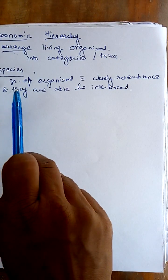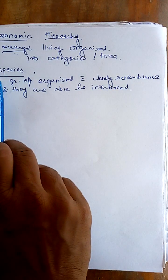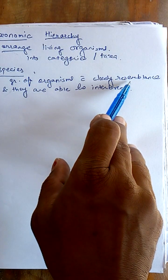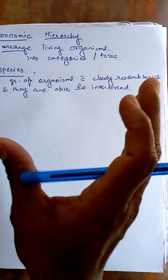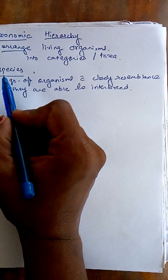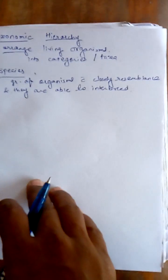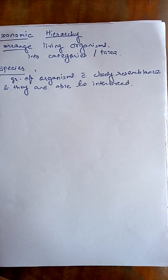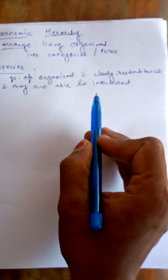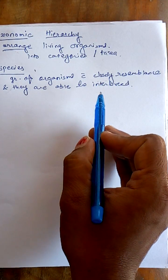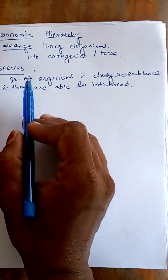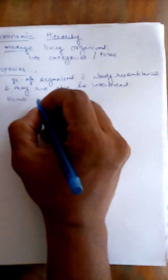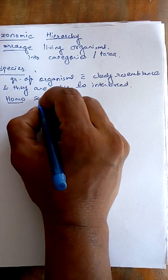In species, we make a group of organisms which show close resemblance with each other and are able to interbreed. We make a group of all such organisms and call them a species. The population where interbreeding is allowed — that group of all those organisms — is called a species.